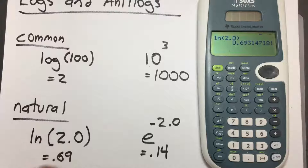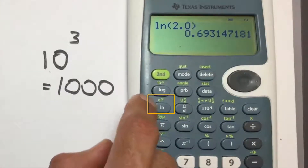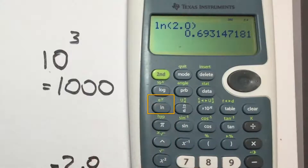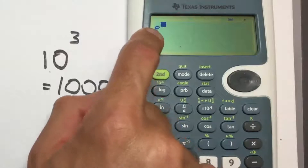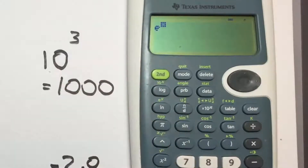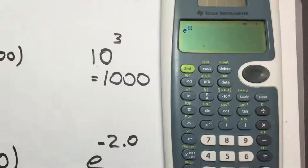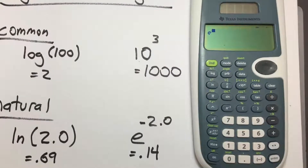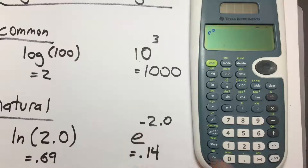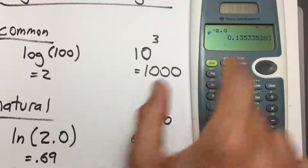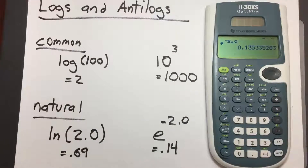To take the anti-natural log, right above LN is e raised to the x in green — that's the same thing as the antilog. Clear the screen, press 2nd, then e raised to the x. This places the lowercase e with a number above it. Do not confuse this for uppercase e — it's a completely different thing, so pressing times 10 to the N would not be the right key. Enter the exponent negative 2.0 and press enter. We get 0.1353, which I've rounded to 0.14.